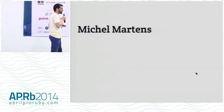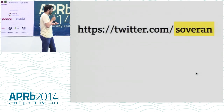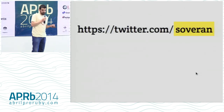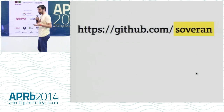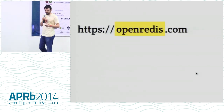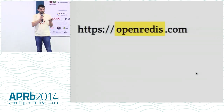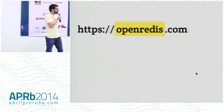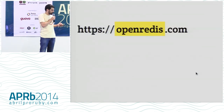My name is Michel Martens, I'm from Argentina. My username on Twitter is Sovereign — it's the same on GitHub. I'm co-founder of Open Redis, which is Redis hosting on EC2.